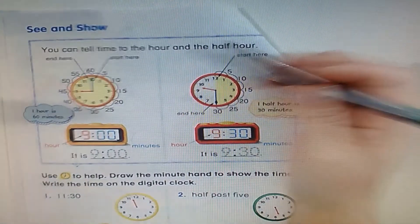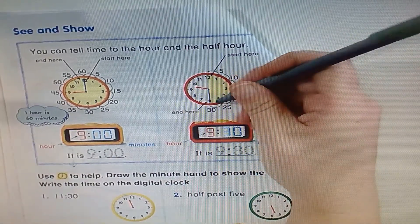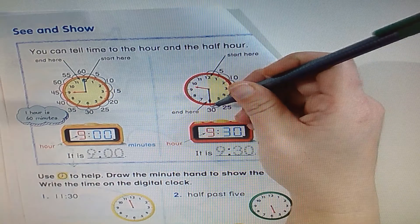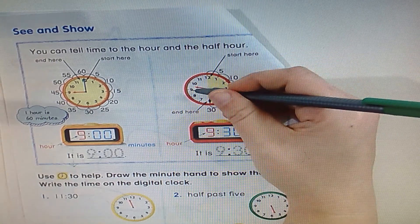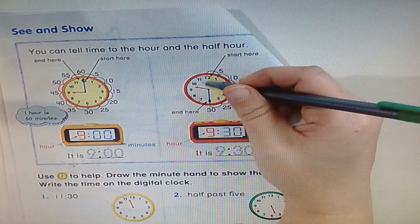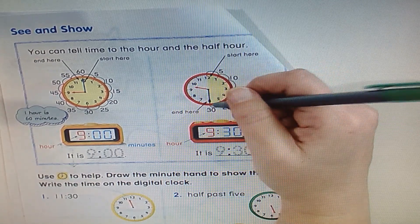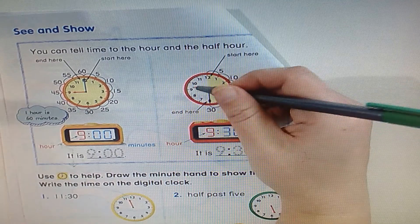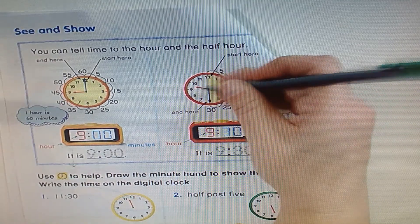Over here, when the minute hand is pointing at the six, that means 30 minutes. So now the hour hand has moved past the nine a little bit to show that we've gone a half of an hour. It's halfway past the nine to the 10, so now it's 9:30.